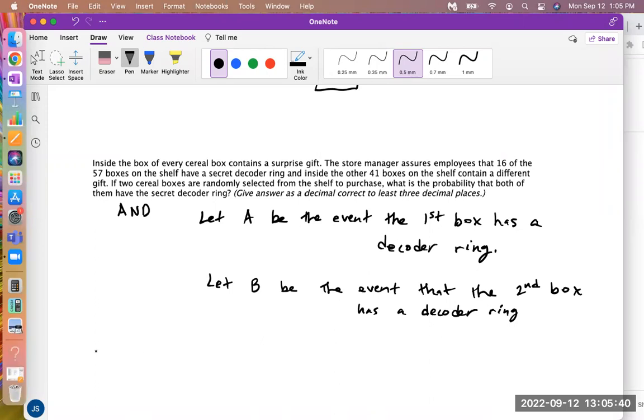So the equation for this is P of A and B is equal to the probability of A times the probability of B, if they're two independent events. That means if the probability of B doesn't change based on the fact that A happened.